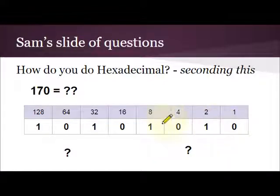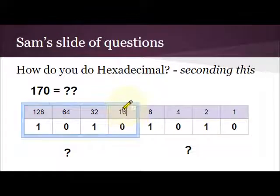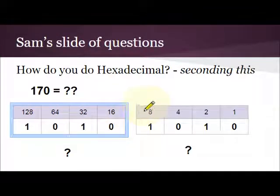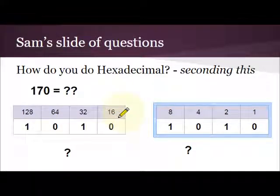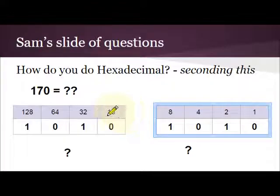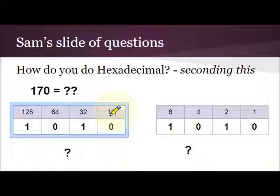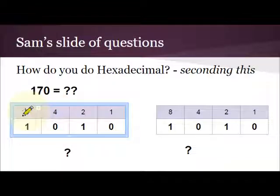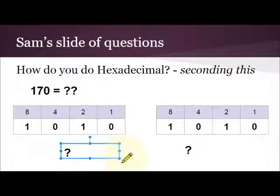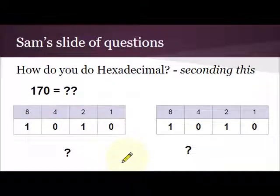The second step is to convert our binary number into two halves. So we split it into two halves. Now, half a byte — an 8-bit binary number is known as a byte — half a byte is a nibble, and we convert these into our individual nibbles. So we don't need that 16, we don't need 64. It becomes 1, 2, 4, and 8. So they have their own individual nibbles.